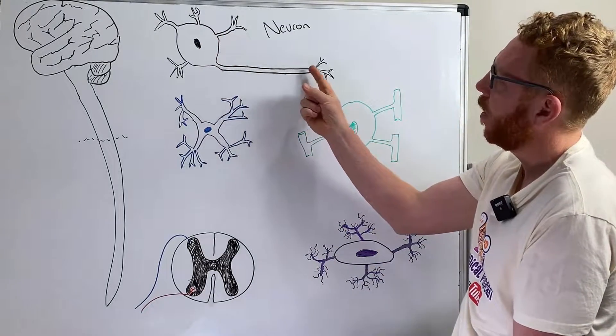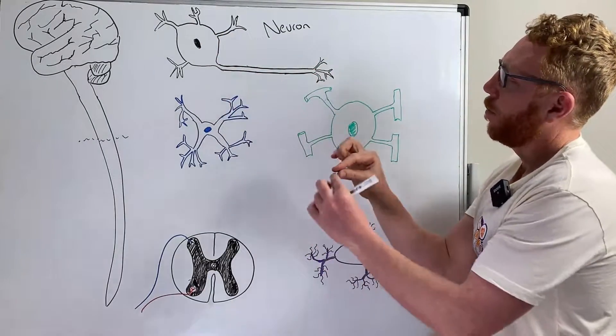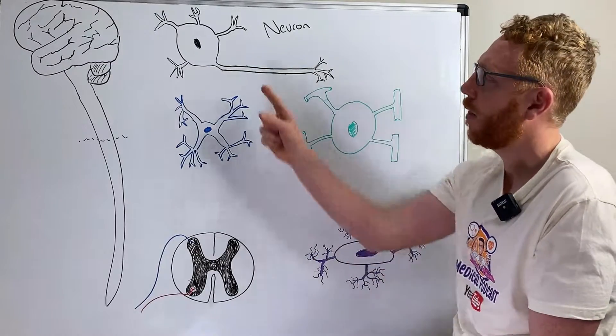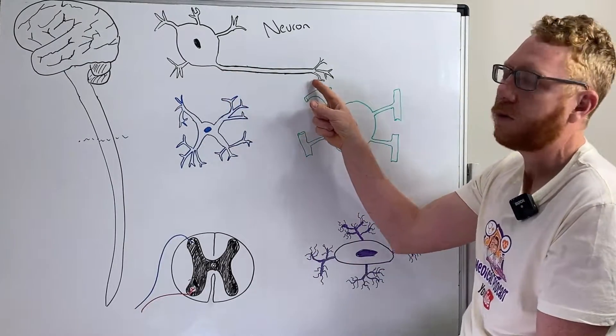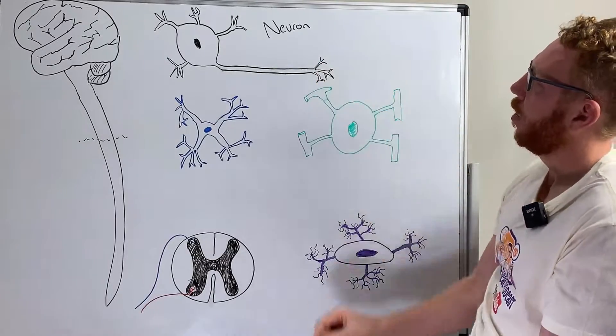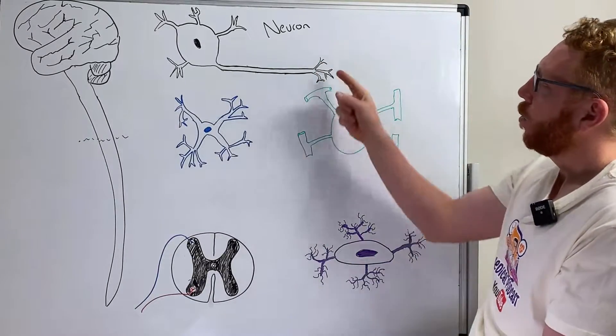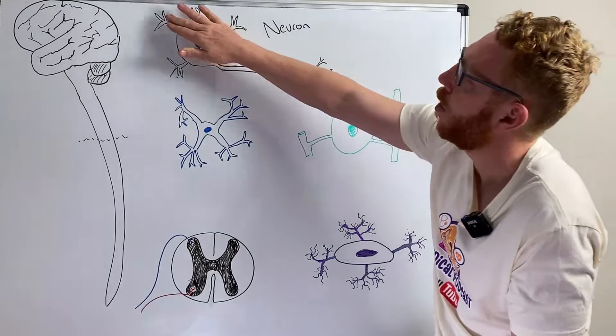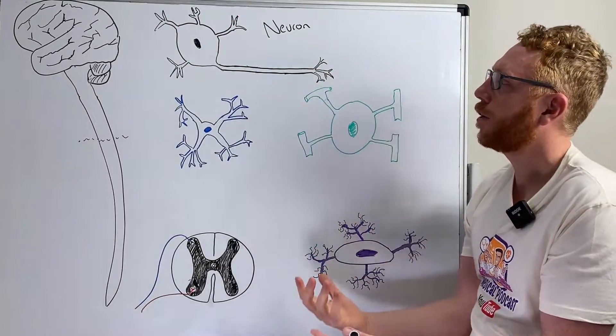Going through the cell body, we have this long, slender projection which we call the axon. This is where the action potential, or the electrical information, is sent right to the end, which is what we call the end terminal, which can then communicate with another neuron at the dendrite or to another effector organ.